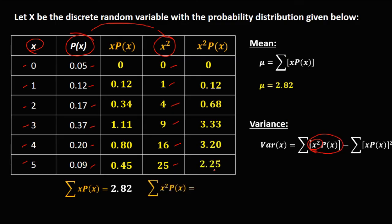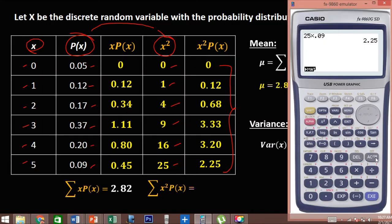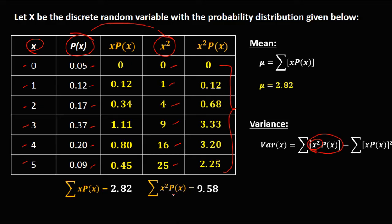Then to get the summation of x² times P(x), just add all these numbers: 0.12 plus 0.68 plus 3.33 plus 3.20 plus 2.25. Therefore, the summation of x² times P(x) is 9.58.